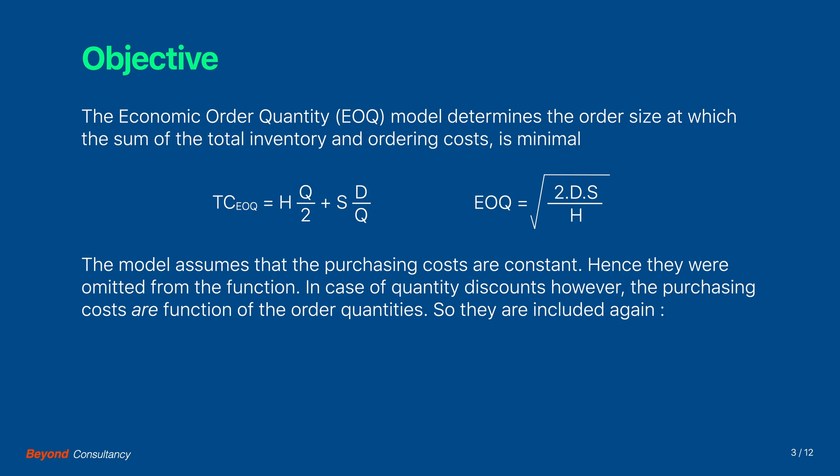In case of Quantity Discounts however, the purchasing costs are a function of the order quantities, so they are included again. This becomes the total cost function of the Quantity Discount model.